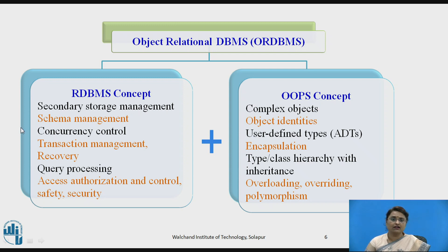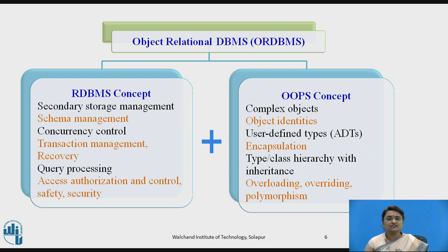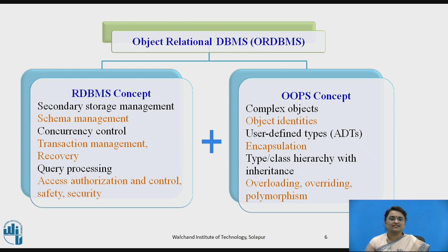The capabilities of RDBMS include: secondary storage management, schema management, concurrency control, transaction management, and recovery when deadlocks occur. Queries are processed at the back end and results are returned. For security, authentication and access control determine who can access what parts of the database. Safety features like backup storage are also provided. All these are handled by the normal RDBMS system.